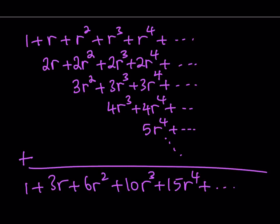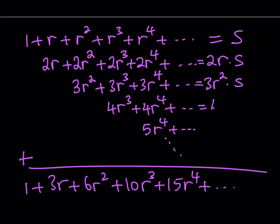If you look at the top row, it is equal to s. What about the bottom one? Well, if you just take out 2r, you're going to get 1 plus r plus r squared, which means that this is actually 2r times s. What about the third row? If you take out 3r squared, you get the same s again, so it's 3r squared times s. It's going to be followed by 4r cubed times s, then 5r to the fourth times s, and so on. So our sum is actually equal to a bunch of other sums that follow a certain pattern.